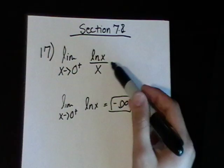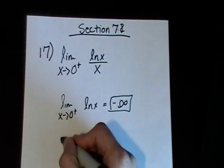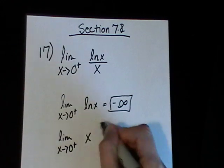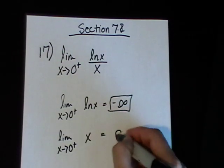And then we want to do the same with the denominator x. So the limit as x approaches 0 from the right of x, that equals 0.